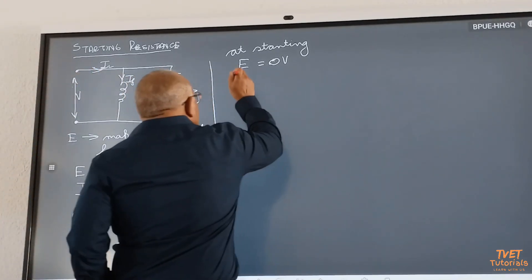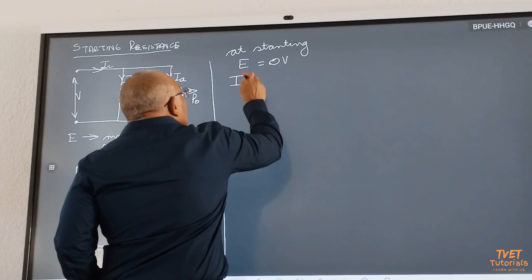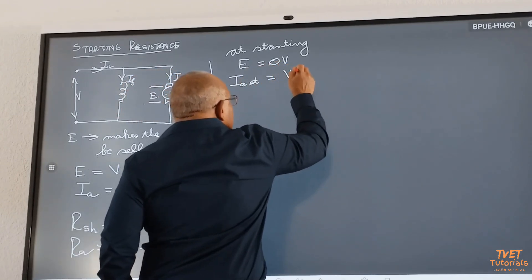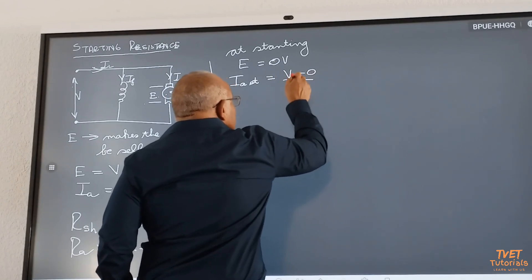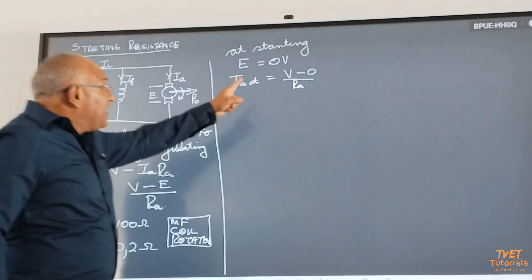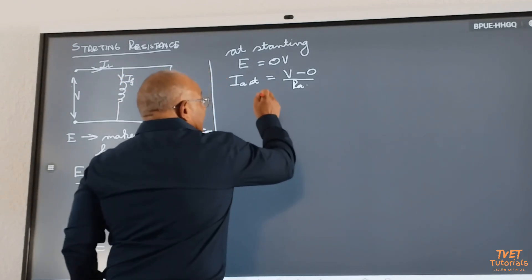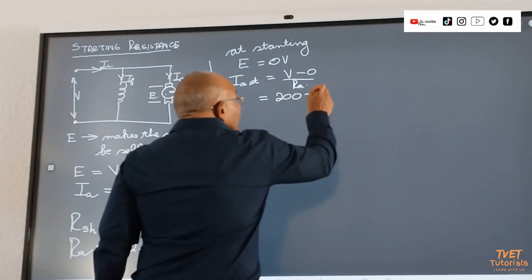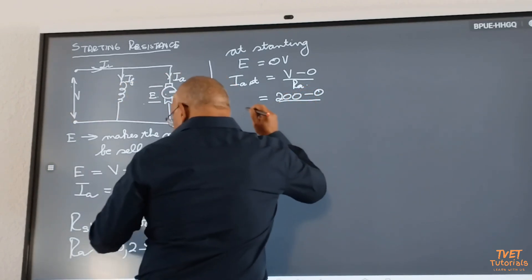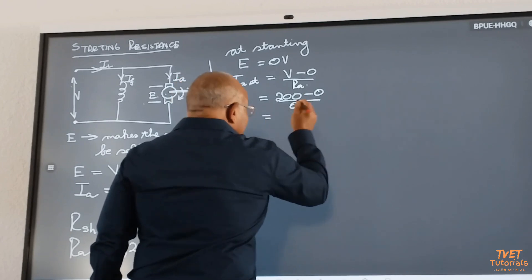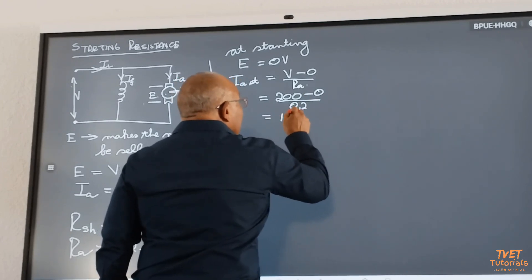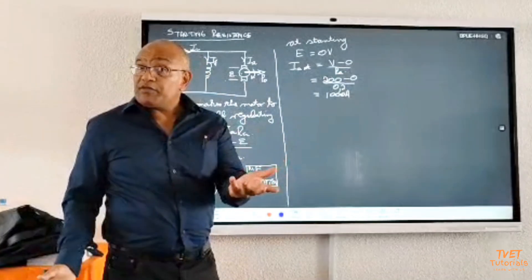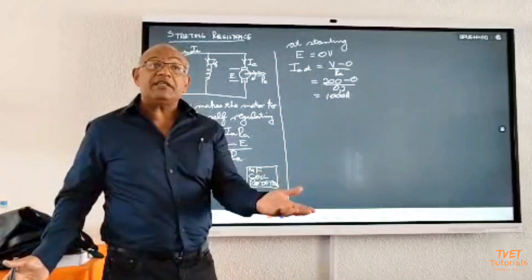Therefore, the formula then becomes I armature star equals terminal voltage V minus zero divided by RA. If we look at a typical machine, if we take a motor supplied at 200 volts, 200 minus 0 divided by the resistance of the armature which is 0.2, that is going to give us something like 1000 amps. Do you think it's possible for us to design the circuit to carry 1000 amps? No.